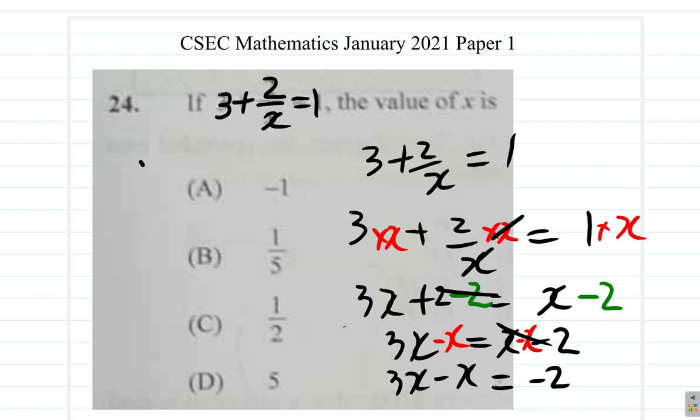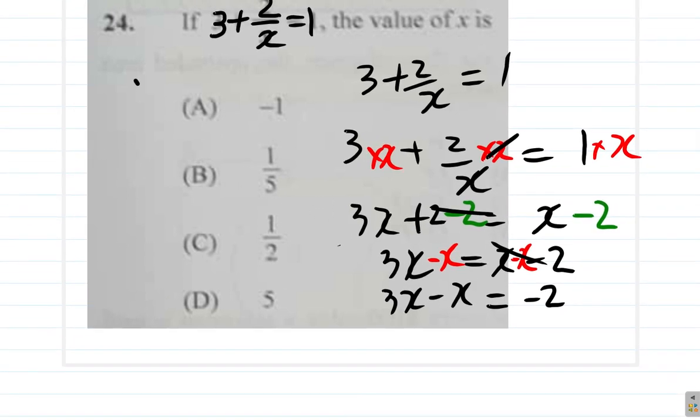But then you would have 3x minus x, which means the same as 3x minus 1x. When you say x, it means 1x. You just have to leave off the 1. If it's 2x, you have to write the 2. If it's 3x, you have to write the 3. But if it's just x, you just leave off the 1.